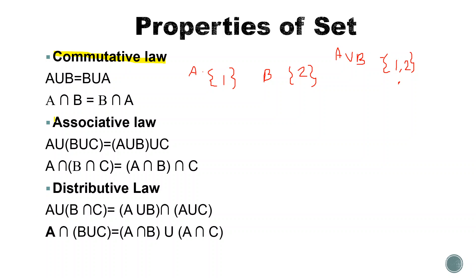The next property is the Associative law. When we have more than two sets, for union: A union (B union C) equals (A union B) union C. For intersection: A intersection (B intersection C) equals (A intersection B) intersection C. The grouping of operations does not change the result.